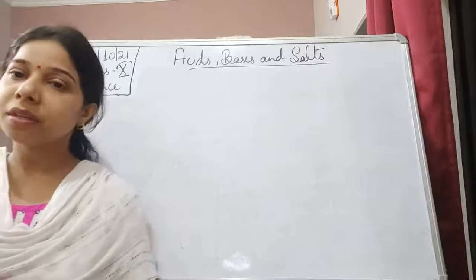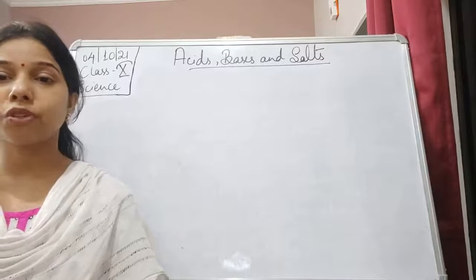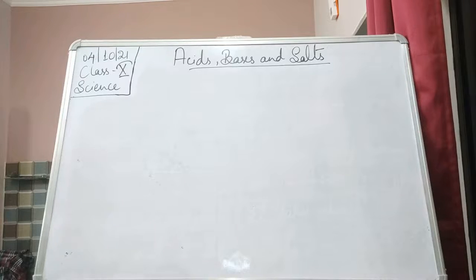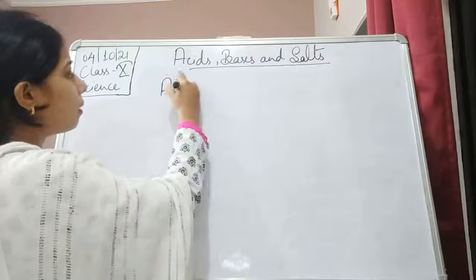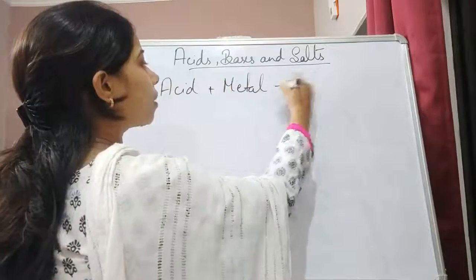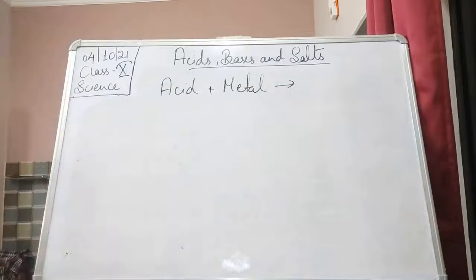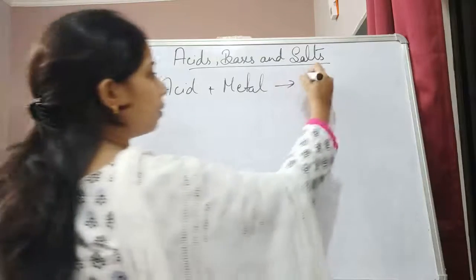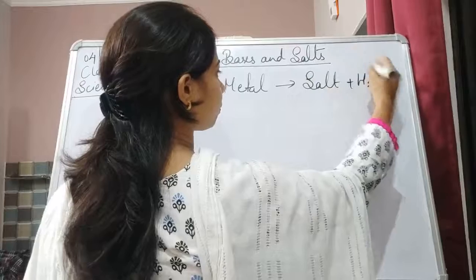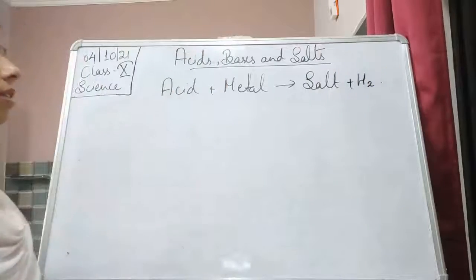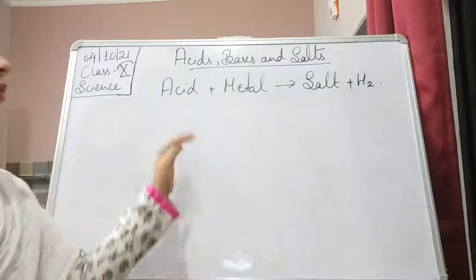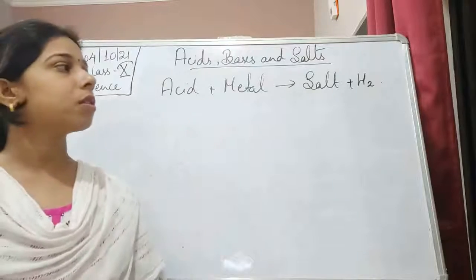Then we started to understand what kind of reaction an acid will show with metals. If we talk about acid reacting with metal — acid plus metal — we know that it will give salt plus hydrogen gas will be evolved. One more thing that you must know: